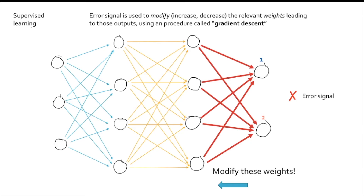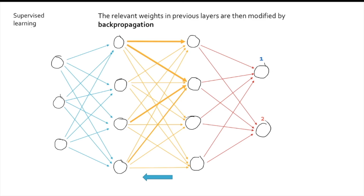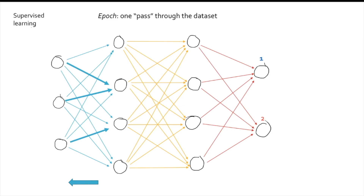This is usually done by an optimization algorithm called gradient descent, whose main goal is to reduce the error produced by the network's outputs. Then the relevant weights in the previous layers are modified by means of an algorithm called backpropagation, which is one of the main techniques for modifying networks with hidden layers, until we reach the first hidden layer. We repeat this procedure with all the members of the dataset. Notice that processing and learning proceed in opposite directions — one forward, the other backward. Once we pass through our dataset, we have gone through one epoch. Training continues for several epochs until the network converges, meaning the weights have stopped changing in any significant way, and the machine has run out of ways to reduce the error. As a consequence, the network has achieved a stable state, and the task hopefully has been learned.